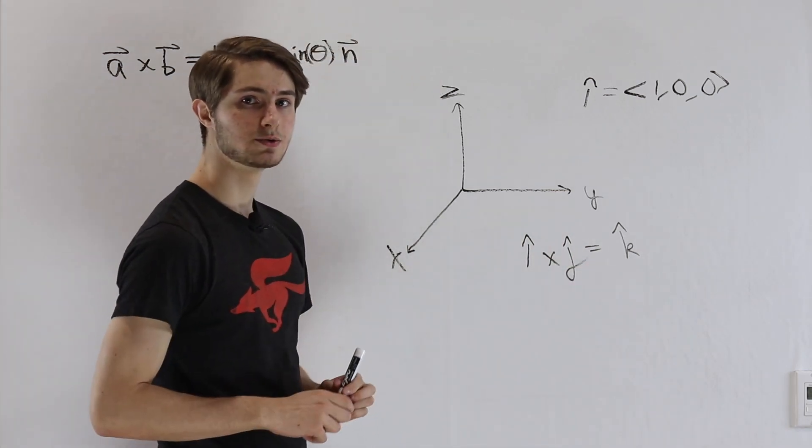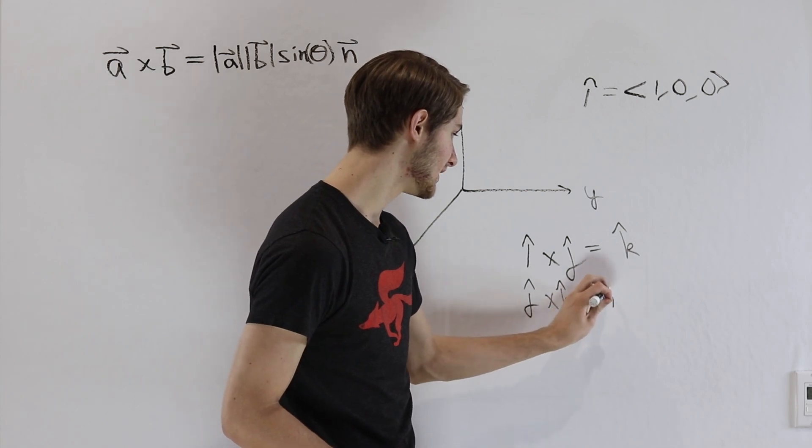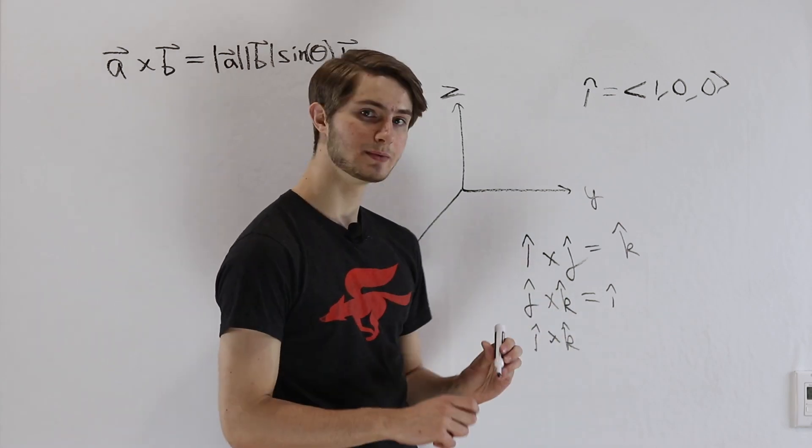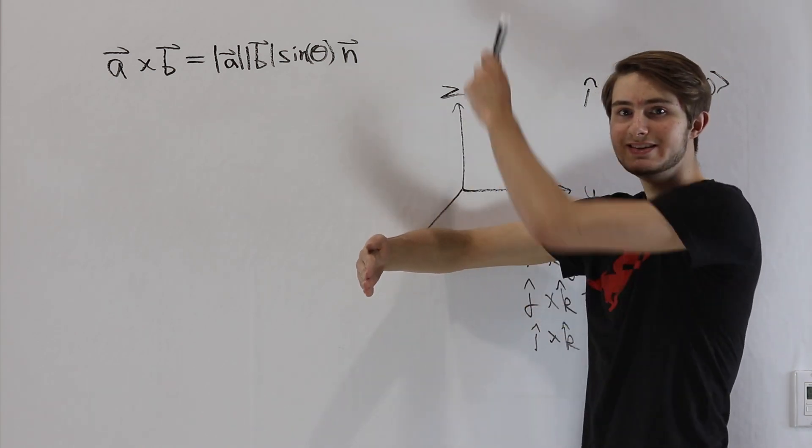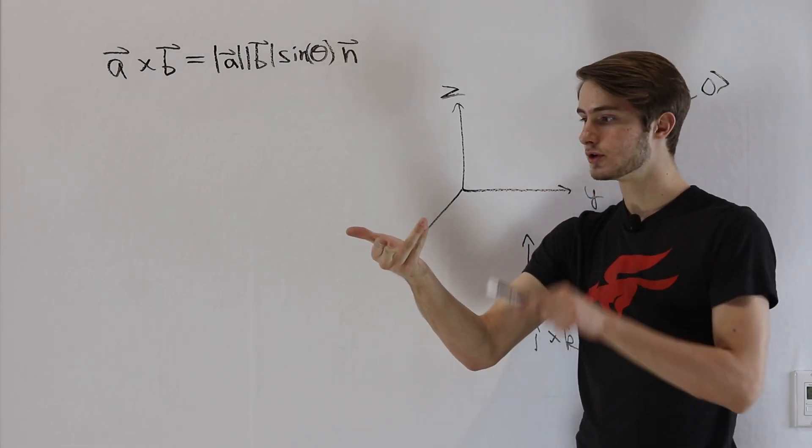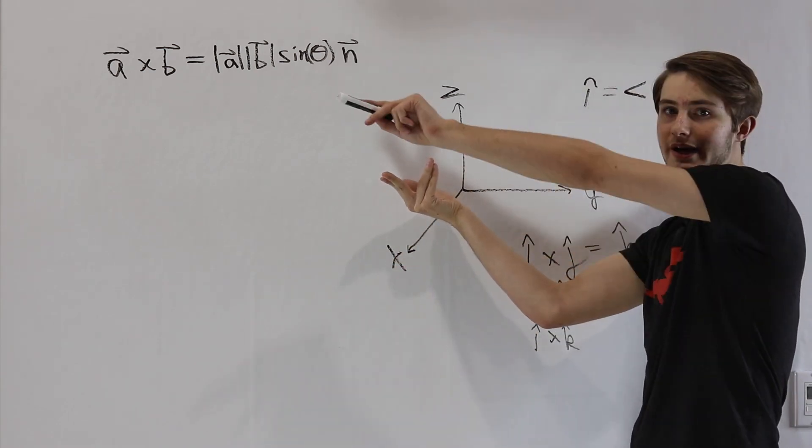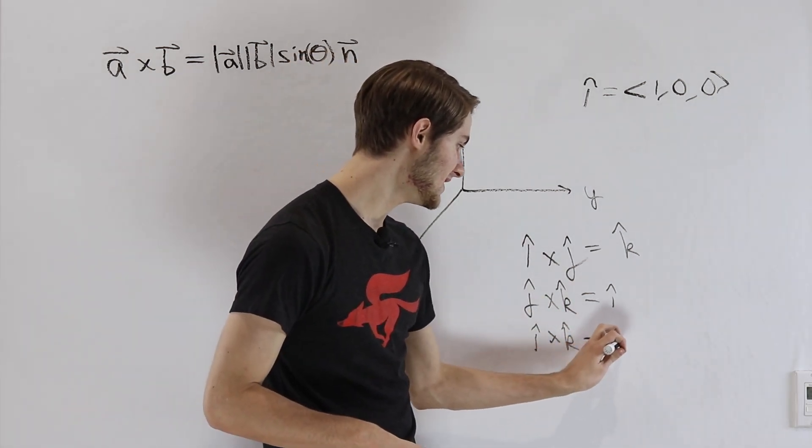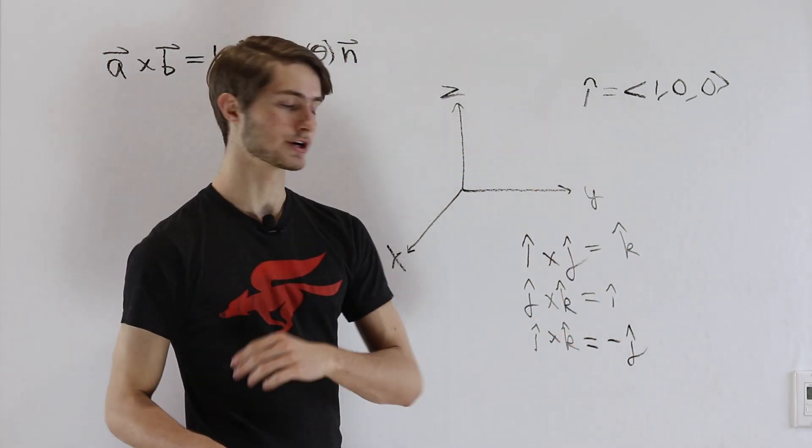If you use the right-hand rule for the other unit vectors, you'll find that j hat cross k hat is equal to i hat. And if you do i hat cross k hat, well, let's think about what that would be. i hat is going to point out of the board. k hat points in the z-axis direction. So I have to turn my hand like this and curl my fingers up. If I look at the normal vector, it's going to point this direction. That's going to be the y-axis, but the wrong way. So we're going to get a negative result. i hat cross k hat is going to be negative j hat. These are the three building blocks that we can use to build our cross product.